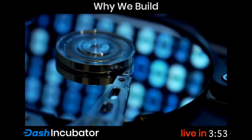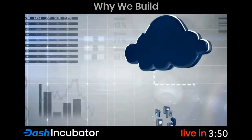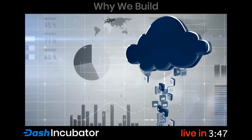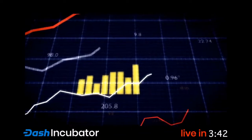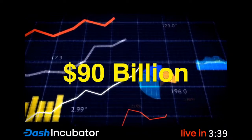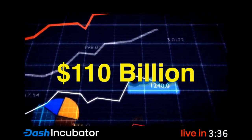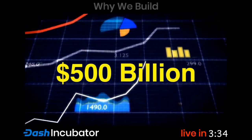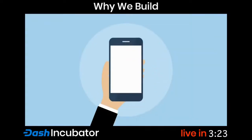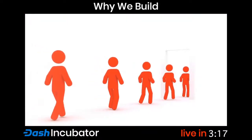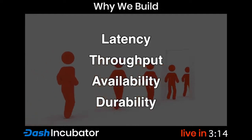Some of it goes to personal hard drives and on-site servers, and a lot of it goes to the cloud — centralized cloud servers maintained by corporations. It's big business and growing fast. A couple of years ago the cloud storage market was about $90 billion; last year it was about $110 billion; by the end of the decade it's expected to be about $500 billion. Today the biggest cloud service providers include Amazon Web Services, Microsoft Azure, Google Cloud Platform, and others. They tend to use a pay-as-you-go model.